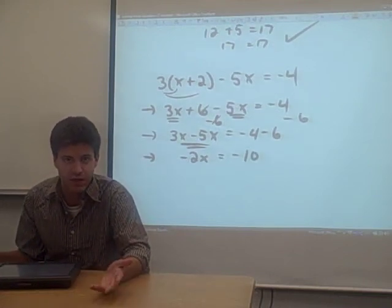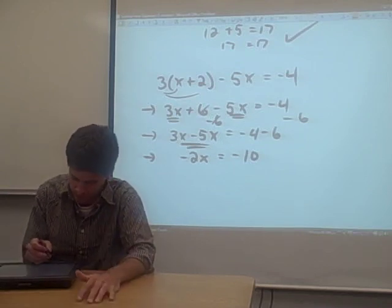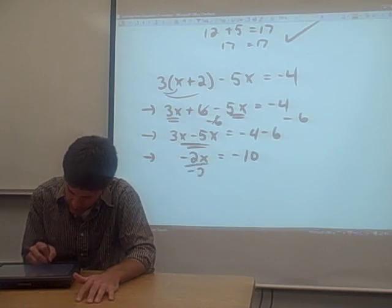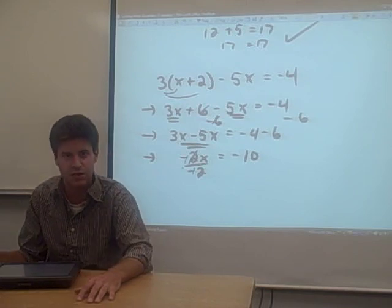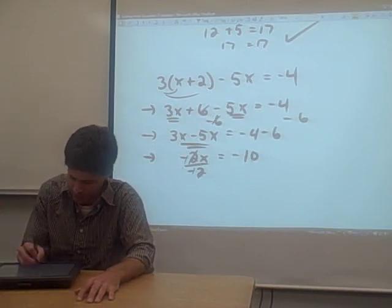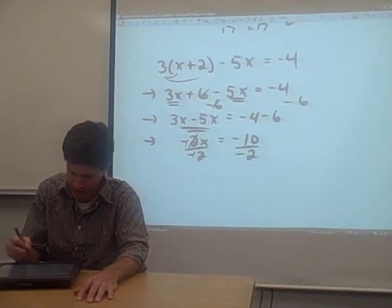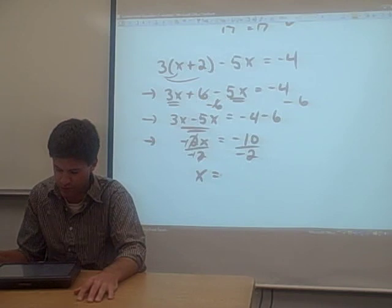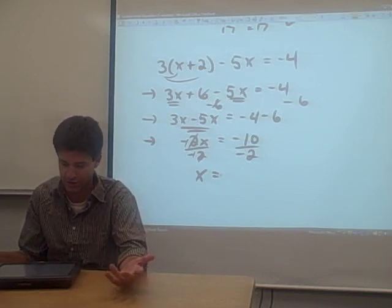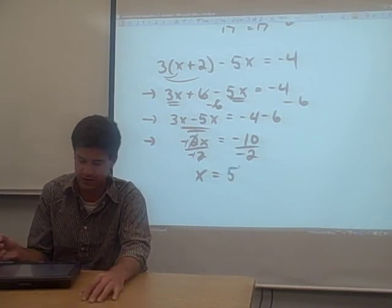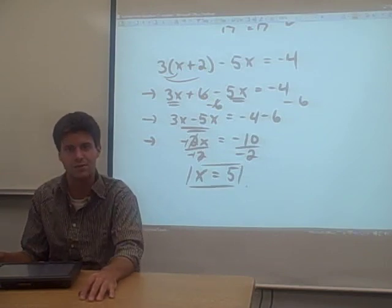So we're almost finished. The only thing we have to do is get x by itself. And the way that we can do that is just divide both sides of the equation by negative 2. When we divide the left-hand side of the equation by negative 2, you notice that the negative 2s just cancel each other out. But in order to make that a legal operation, we have to do the same thing to the right-hand side of the equation. So what we get is x equals negative 10 divided by negative 2. Now whenever you're dividing two negative numbers, you're just getting a positive number. In this case, 10 divided by 2 equals 5. So there you go, there's your answer.